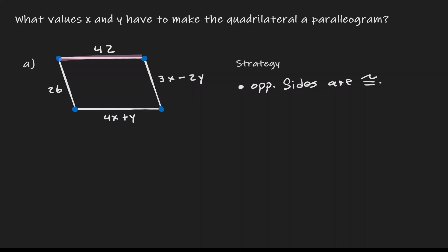Here we have a side of 42, and here we have a side with a length of 4x plus y. If we want them to be congruent, let's set them equal to each other. So our first equation is: 4x plus y equals 42. The same goes with the other sides — the side of 26 must be equivalent to the side of 3x minus 2y. So our second equation is: 3x minus 2y equals 26.